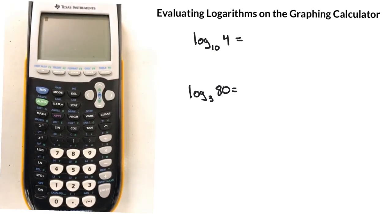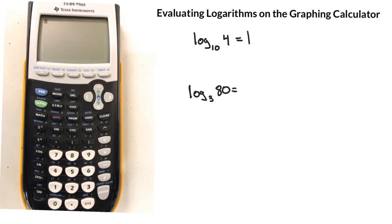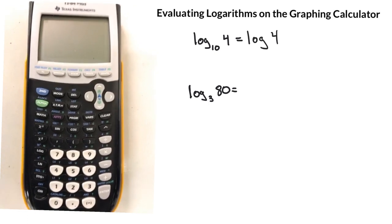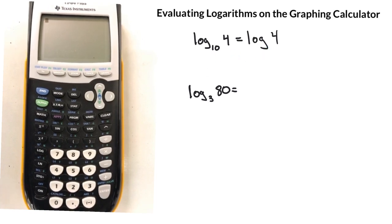First thing to remember is that log base 10 of 4 could also be written as just log of 4. So if you do not have a base, or if there is not a base written here, it is automatically implied that it is always a base of 10. So nothing written is a base of 10, so these are equivalent statements.